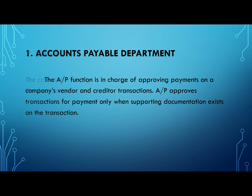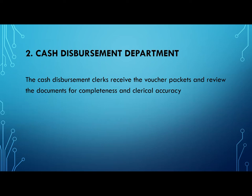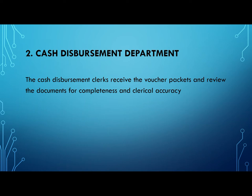The Cash Disbursement Department: the cash disbursement clerks receive voucher packets and review the documents for completeness and clerical accuracy. The clerk prepares a three-part check and records the check number, dollar amount, voucher number, and other pertinent data in the check register. The check along with supporting documents goes to the cash disbursement department manager or treasurer for signature. The negotiable portion is mailed to the supplier. The clerk returns the voucher packet and check copy to the AP department, files one copy of the check, and sends a journal voucher to the general ledger department.